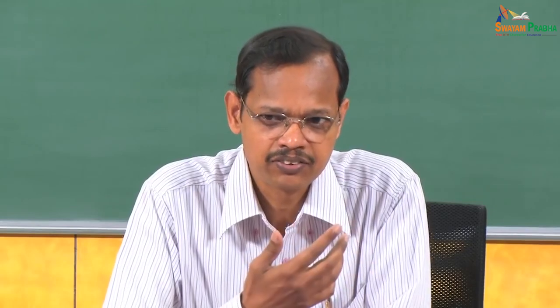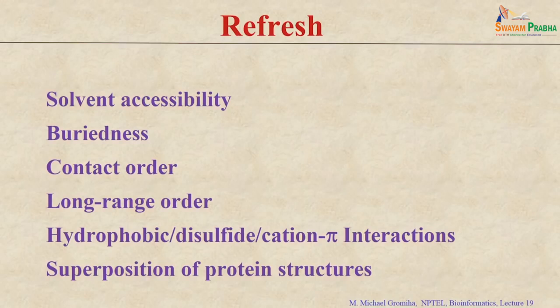In the previous class we discussed about various parameters or properties which can be derived from protein 3D structure. What are the various parameters? Contact maps, solvent accessibility, buriedness, solvent accessibility reduction ratio, transfer free energy. And based on contacts you can see the contact order, long range order, multiple contact index. Then other parameters like hydrophobicity and the interaction between two different residues — hydrophobic interactions, cation-pi interactions, electrostatic interactions, and so on.